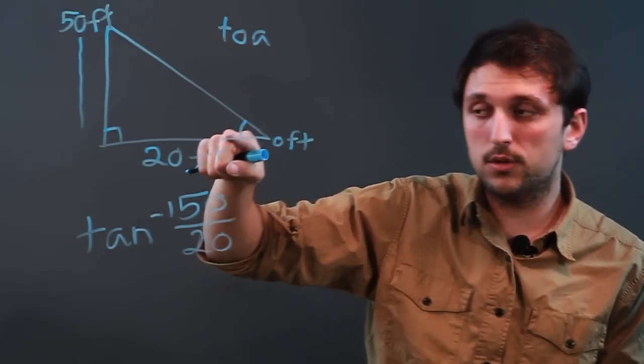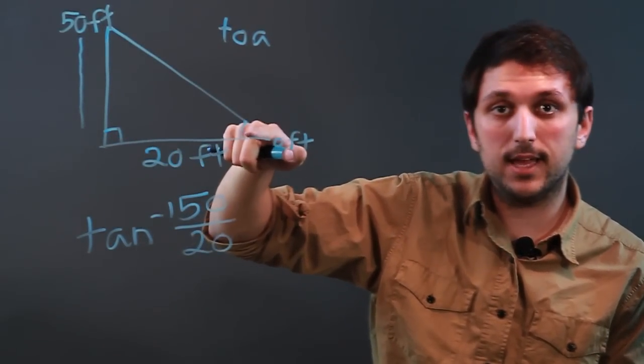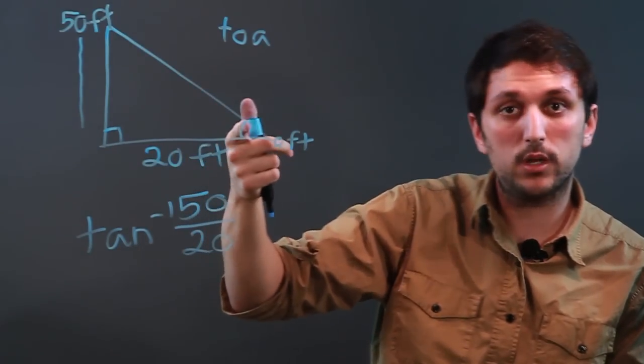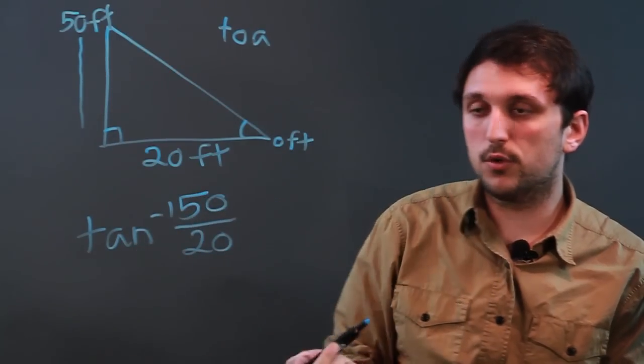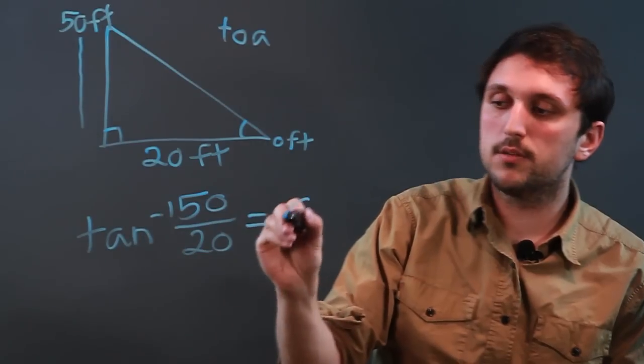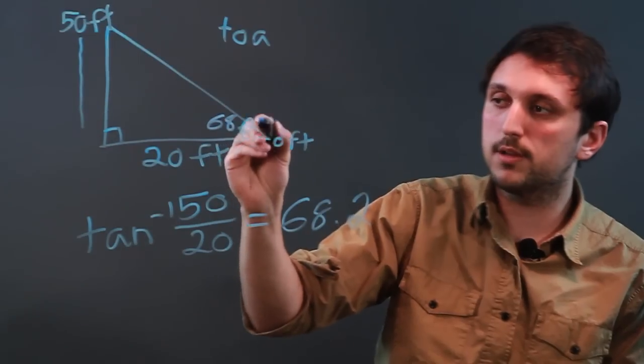Now, if we had the angle and we had one side and we didn't know the other, or we just had the angle, we would say tan 40. But here we don't have the angle. So it's tan inverse 50 over 20, which is going to be 68.2. So the angle of elevation here would be 68.2.